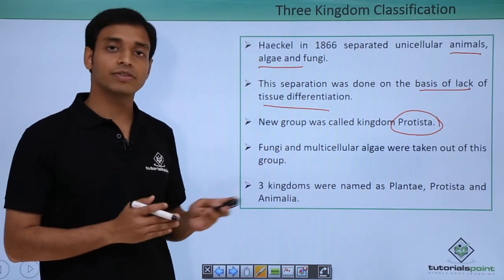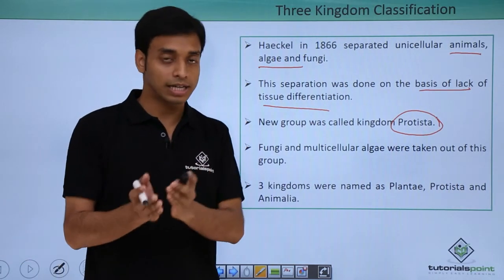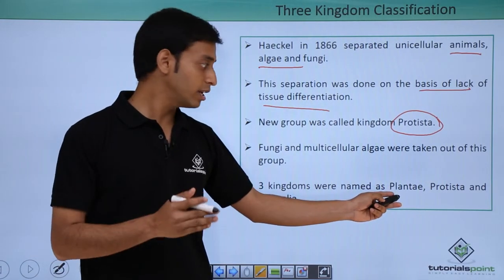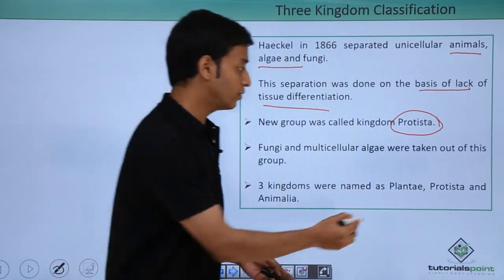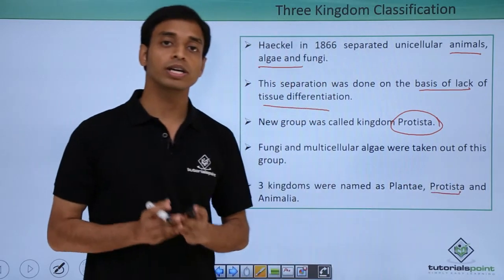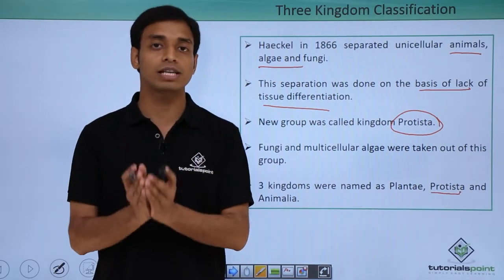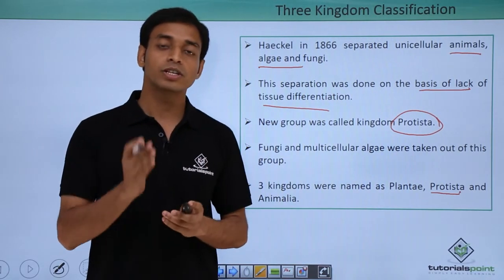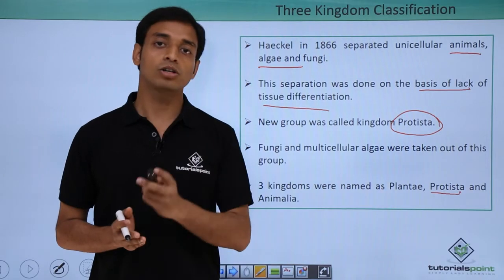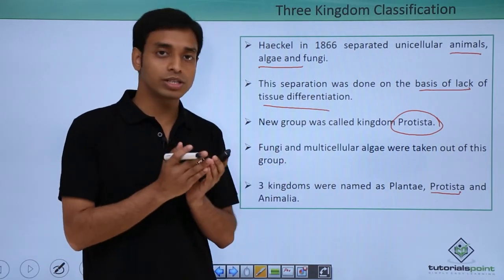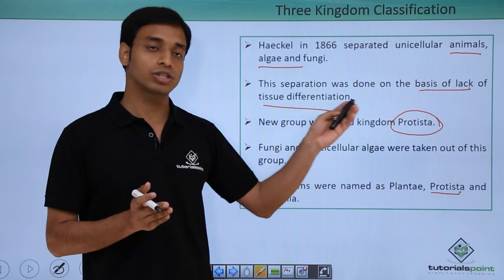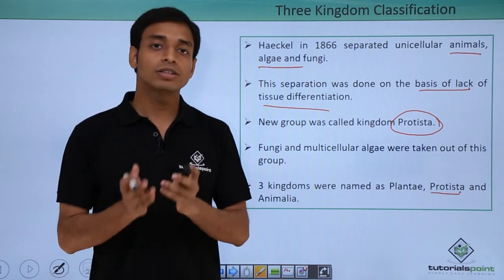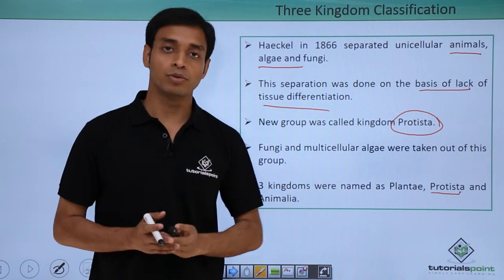Based on this classification, the three kingdom system gave us three different kingdoms: Kingdom Plantae, Kingdom Animalia, and the newly introduced Kingdom Protista. In this video we have talked about the three kingdom system of classification put forward by Haeckel to overcome the disadvantages of the two kingdom system, and the basis of lack of tissue differentiation used in this classification.